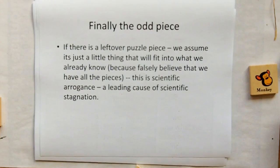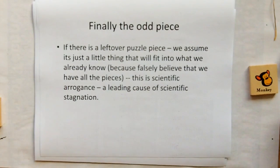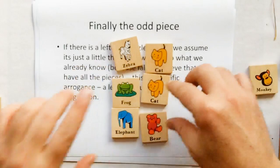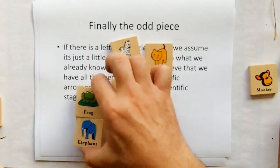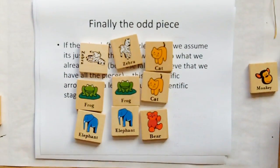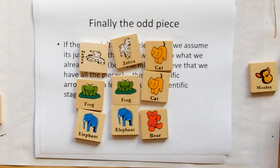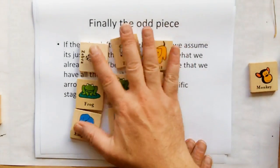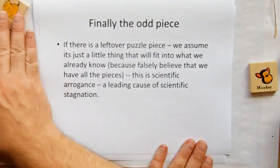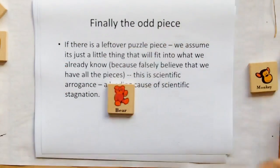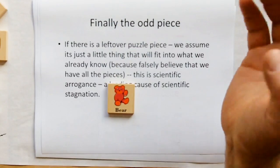And finally, the odd piece. We have the odd piece from this example over here — this is the key. When we know we have a limited footprint and we have one piece that doesn't fit, that should be the key to tell us we have a limited footprint and there's more to go. But the problem in science is that we falsely believe we have all the pieces, and we believe this one odd piece will fit somewhere within the realm of what we already know.